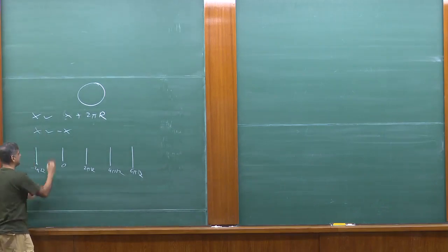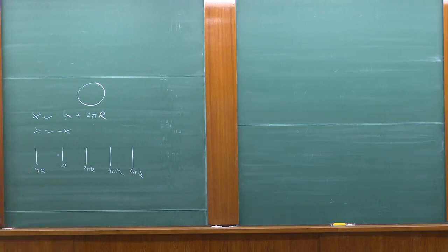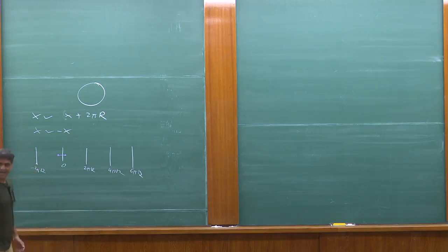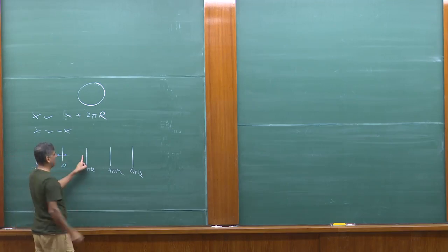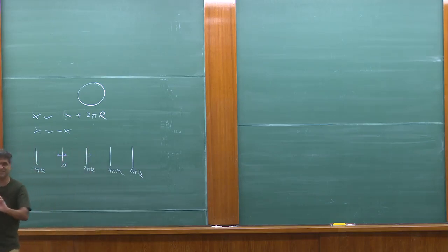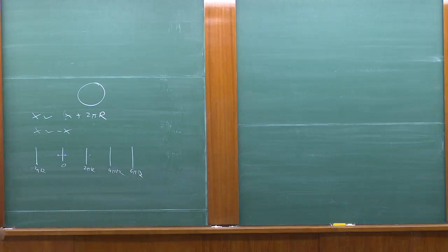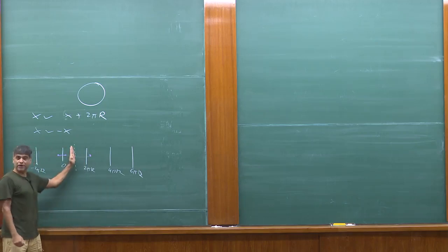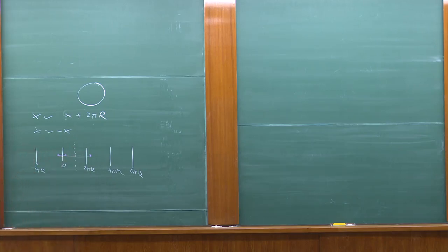Suppose I have a string that starts off here. After it winds around 2π on the worldsheet, where can it end up? It could end up back here, or it could end up at a winding state. But it could also end up at πr, because this point is the same as the origin — reflection around x is the same as reflection around 2π, since 2π is the same point as 0. So this is another option: a state with a fixed point not at 0 but at π.